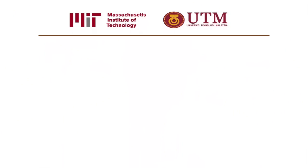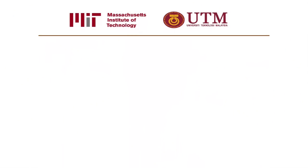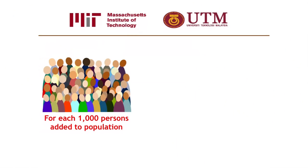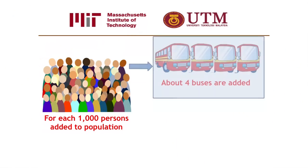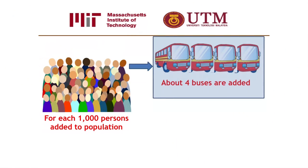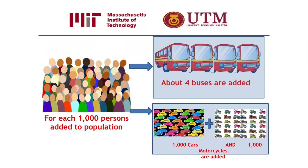In Malaysia, there have been no additions to the rail system over the past few years, and only a very small increase in bus registration over the same period. For each 1,000 persons increase in population, there is an increase of less than four buses, including private and public buses, about 1,000 passenger cars, and about 1,000 motorcycles added to the road network.